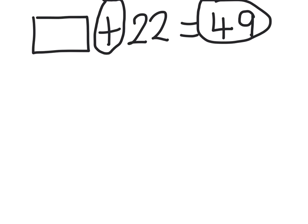I also know the missing number is smaller than 49, so I'm going to start off by doing the inverse, which is subtracting. I'm going to do 49 take away 22.